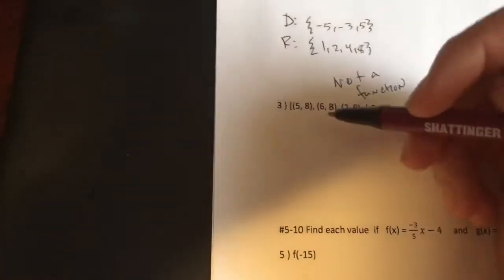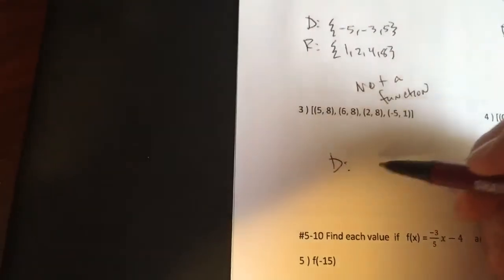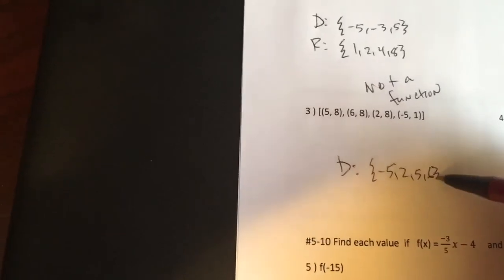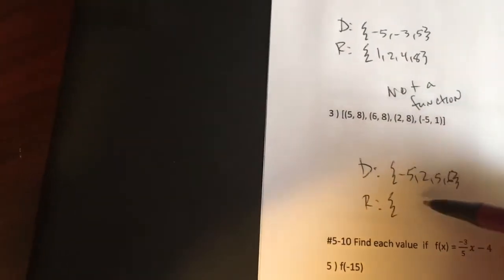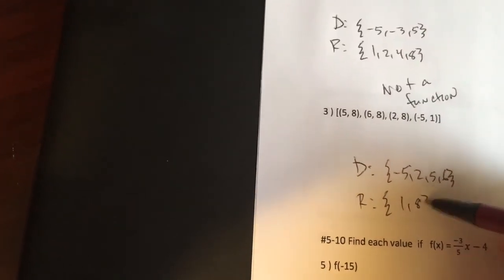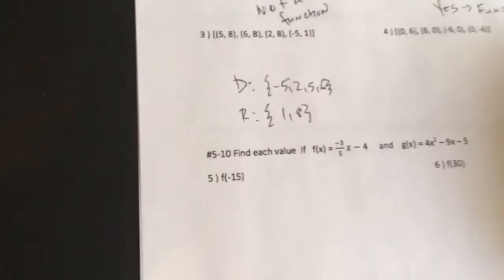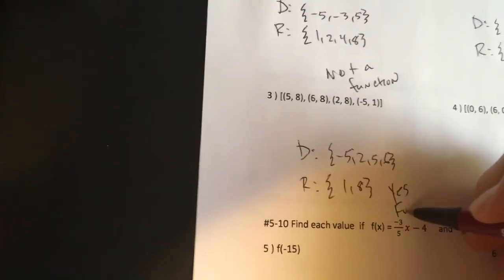All right. Take a look at the next one, the domain 5, 6, 2, and negative 5. I'm going to put those in order. I see no duplicate x's, so that should tell you something about it. I see a bunch of 8's. But remember, so this is not 1 to 1, but it is a function because every x is only paired with one unique y. So this is yes. For a function, it is not 1 to 1, but it is a function.